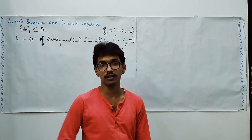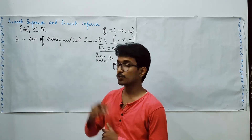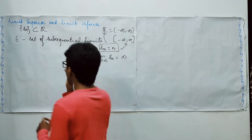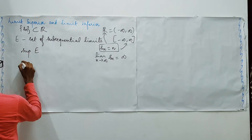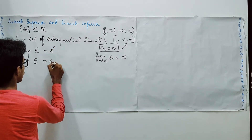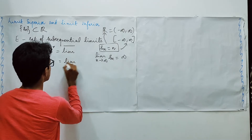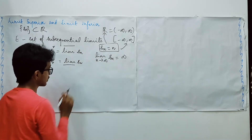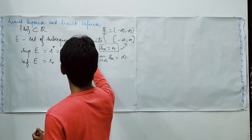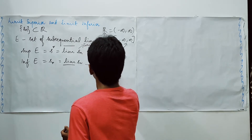In the extended real line, we collect all possible sub-sequential limits and with the help of it, we define limit superior and limit inferior. We take the supremum of E and infimum of E. These may be denoted as S upper star or S lower star, also written as limit upper bar or limit lower bar of the sequence Sn. The supremum is called limit superior and the infimum is called limit inferior.